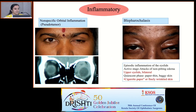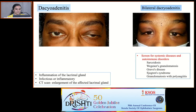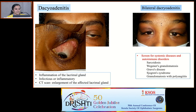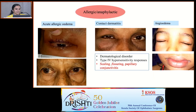Coming to inflammatory causes. Pseudotumor is an orbital inflammation without any identifiable systemic or local causes. Blepharochalasis is a rare episodic inflammation of the eyelids characterized by stages of acute attack of non-pitting edema, followed by a quiescent stage of cigarette paper-like thin skin. Patients with dacryoadenitis will have inflammation, redness, and swelling more towards the superior lateral aspect of the orbit. Whenever there is bilateral dacryoadenitis, try to rule out various underlying systemic or autoimmune conditions.